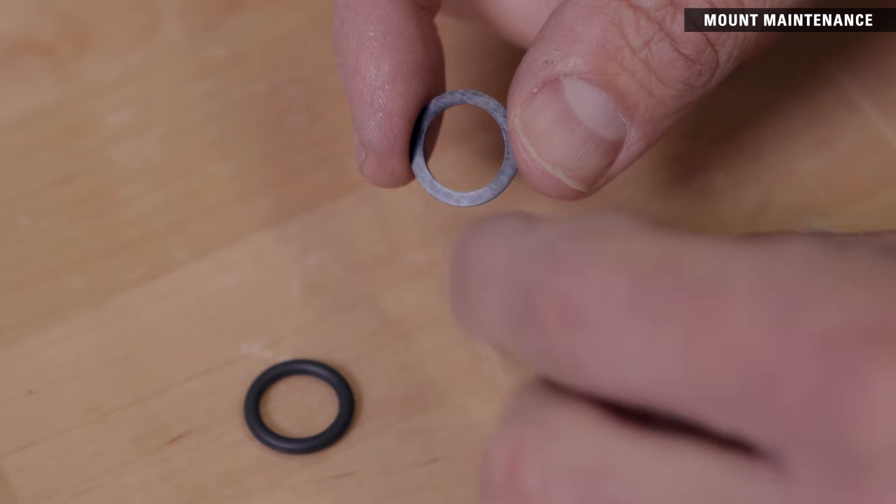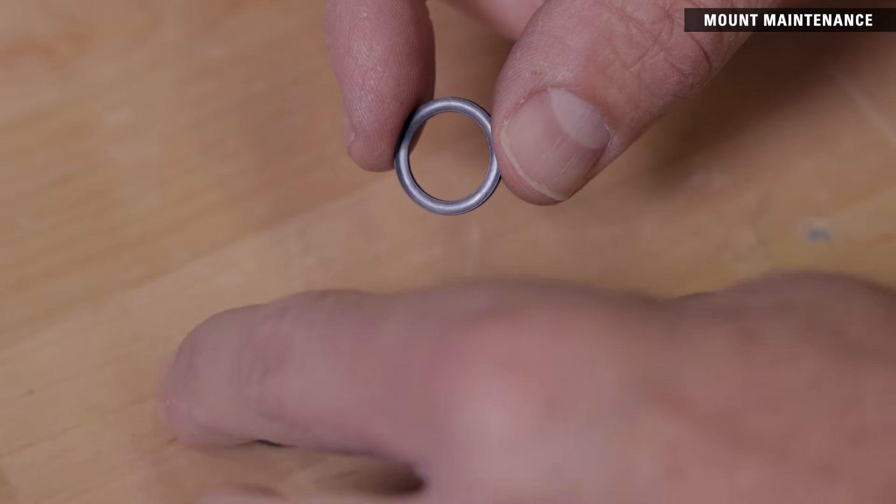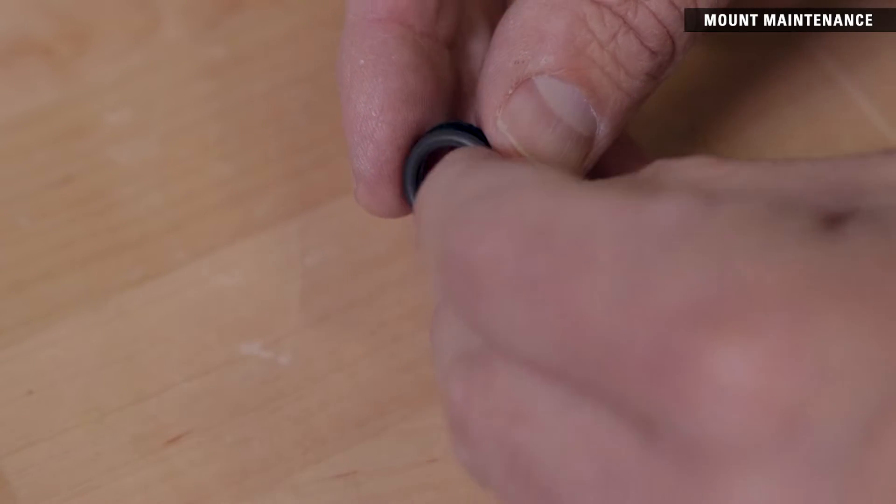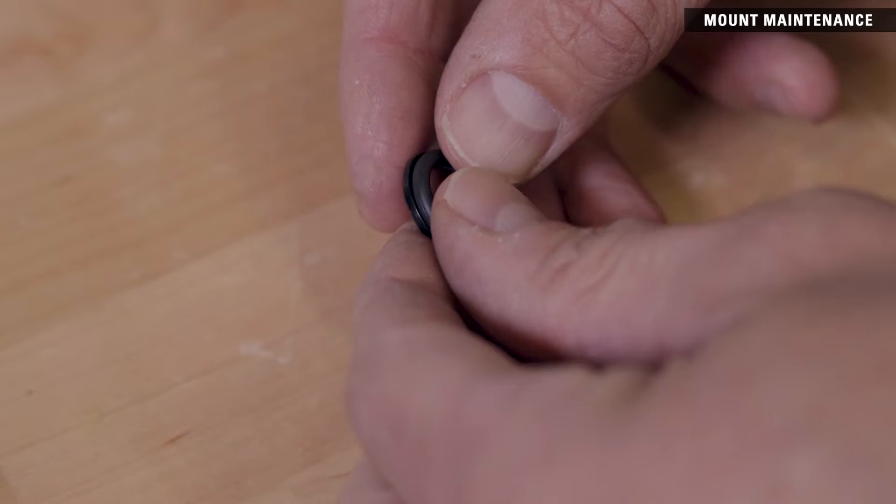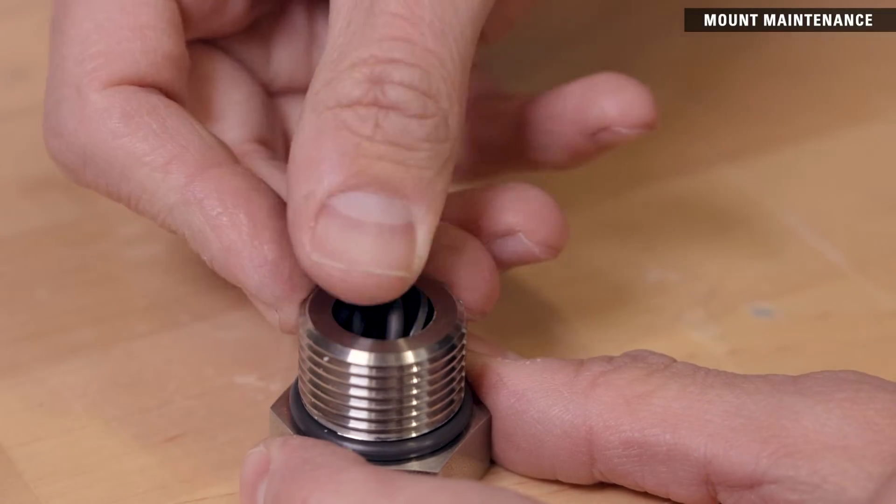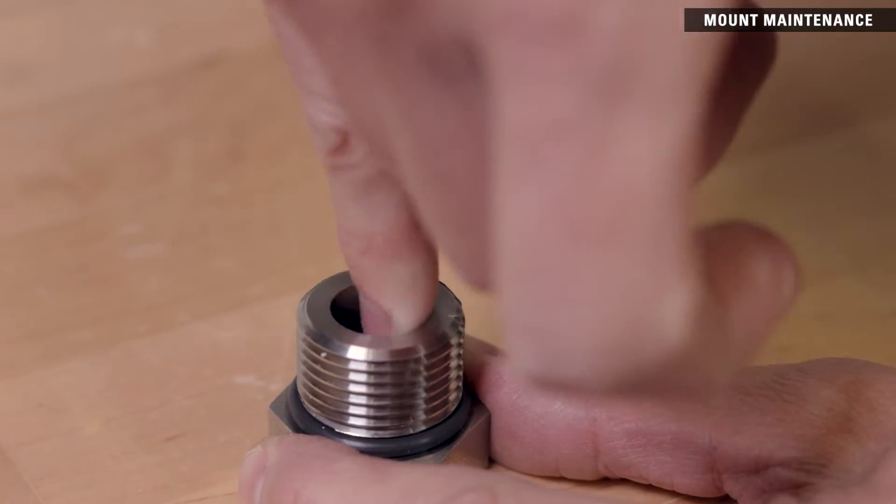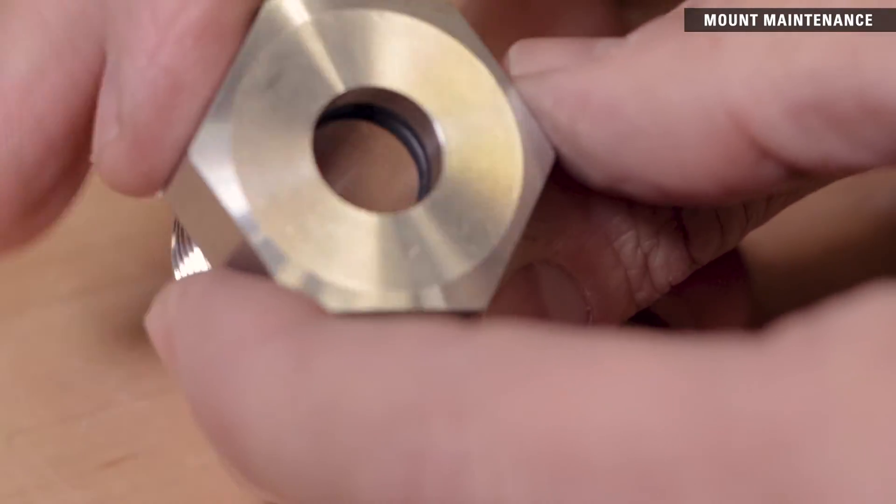For both bearing hubs, stack the o-ring on the concave side of the backup ring. Insert the stack back up ringside down into the bearing hub and push down until it seats. Turn it over to make sure it's sitting flush.